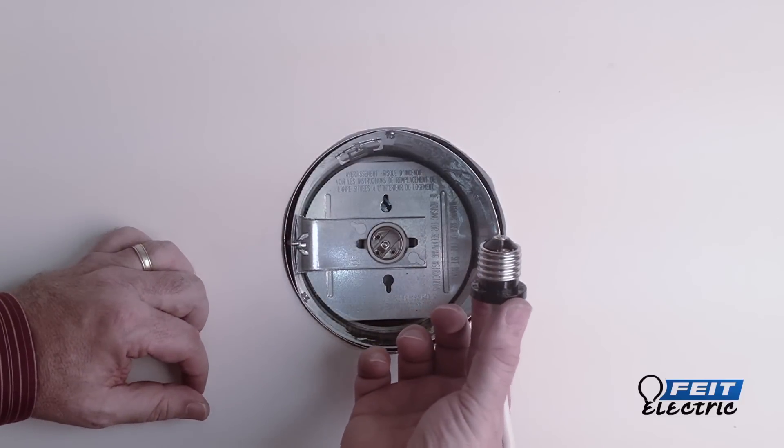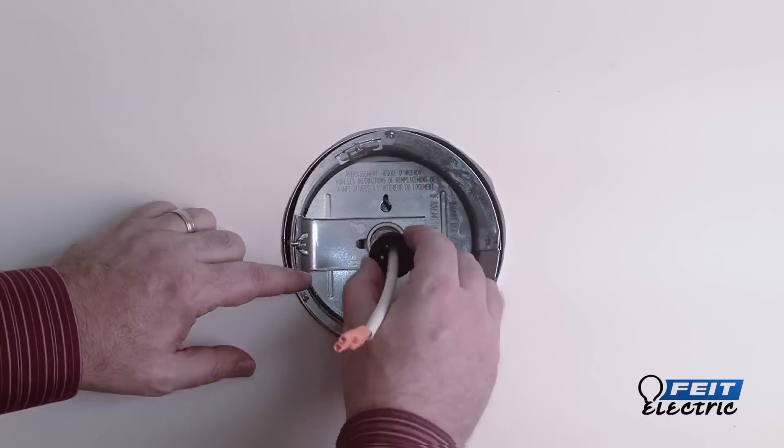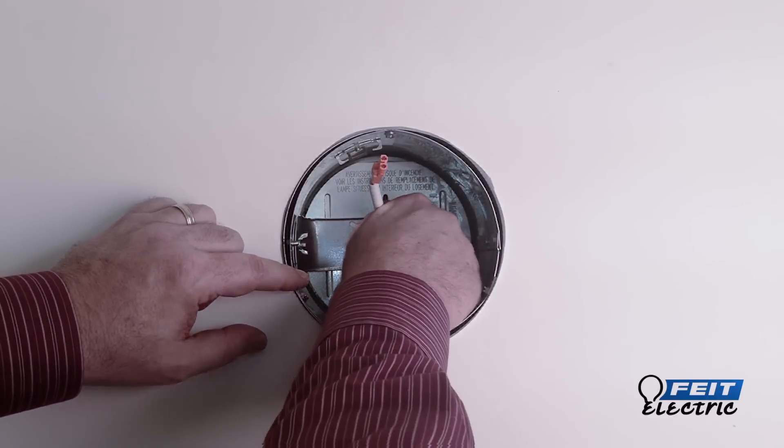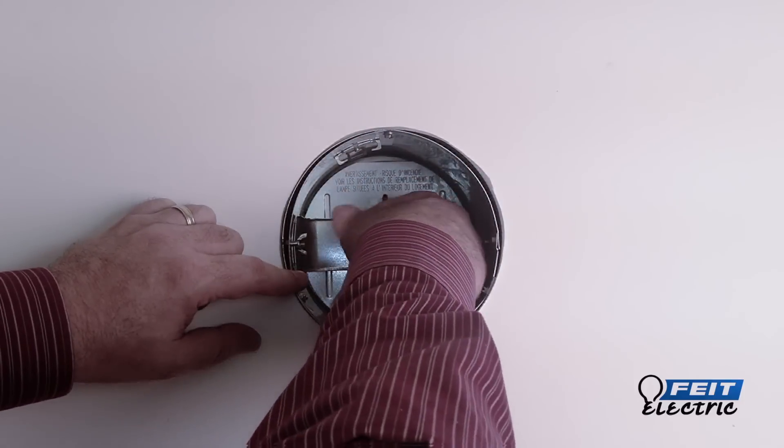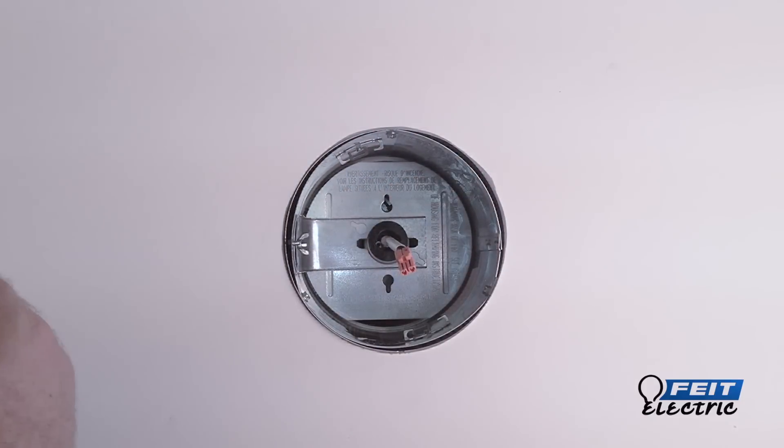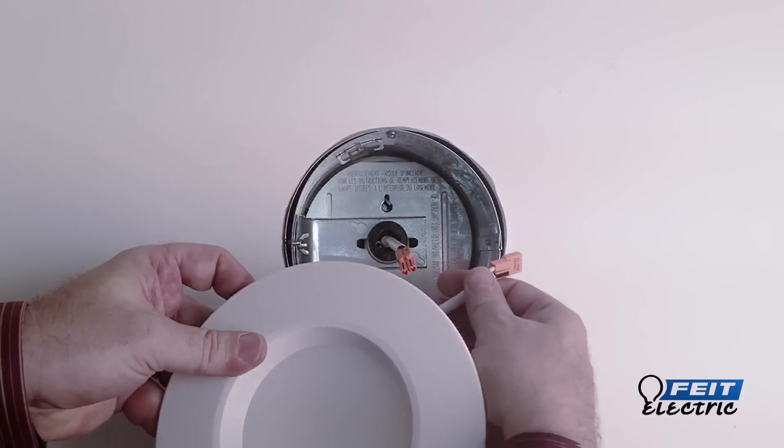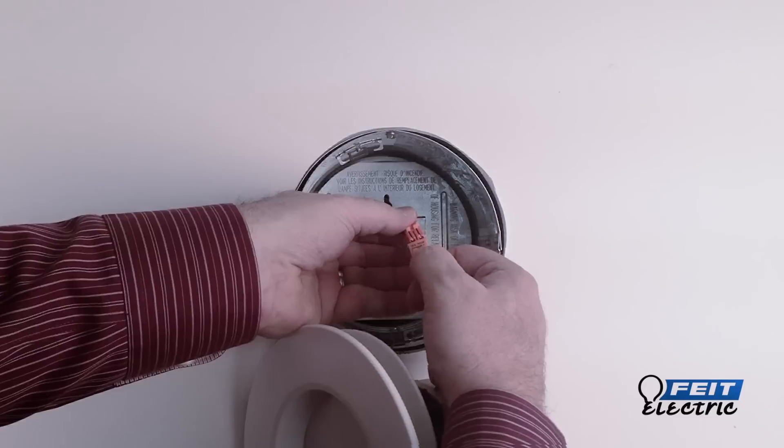The lamp holder adapter is then installed into the lamp holder. And then, the electrical connection is made to the recessed trim.